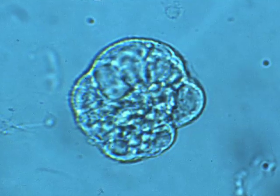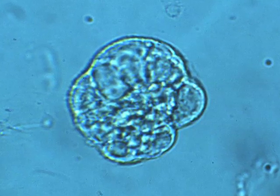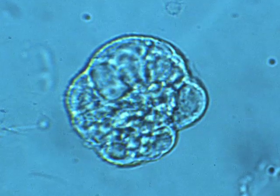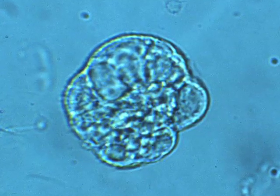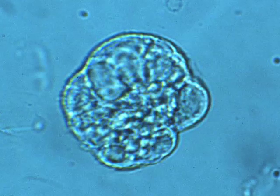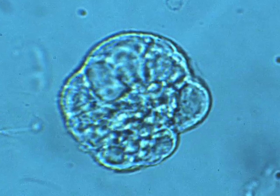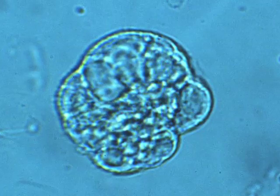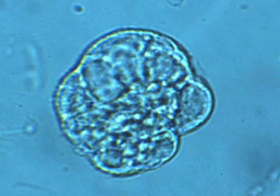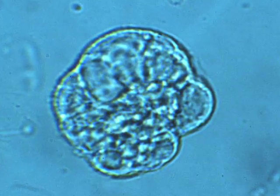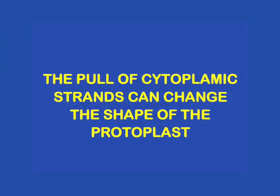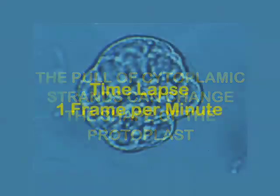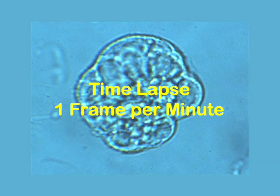However, not all isolated plant protoplasts are spherical. Depending on the internal architecture, cytoplasmic strands may shorten and pull the membrane inwards, or they may lengthen and allow the protoplast to swell locally. Through cytoplasmic streaming,